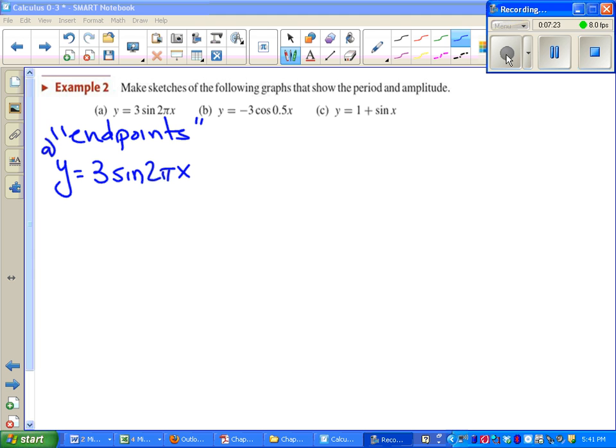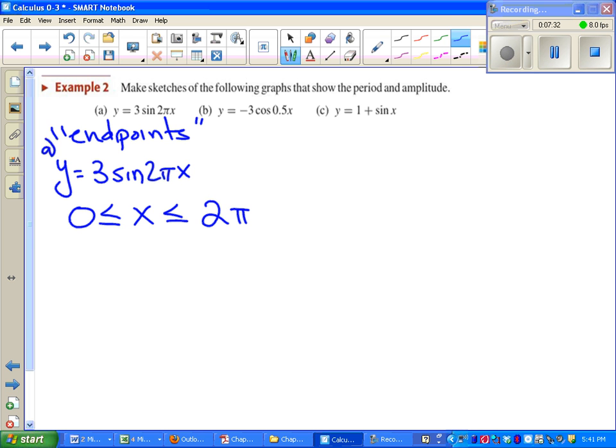The first thing I taught in pre-cal for these was to find the endpoints. Again, these are endpoints with air quotes. It's the end of the period. And what we learned was that the period for sine went from zero to two pi. Except we're not looking at x on the inside anymore. So I'll erase that x and change it to a two pi x. Then we tried to solve for x, which is a simple matter of dividing everything by two pi.